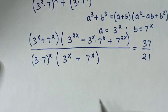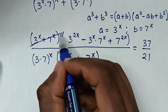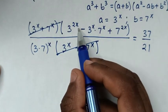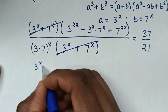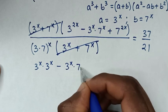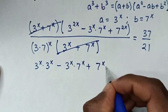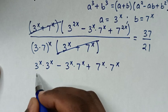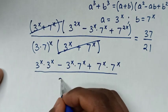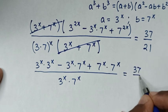Then in the next step, from the numerator we have 3^x plus 7^x, and also here in the denominator, so this and this will cancel. Then 3^(2x) is the same as 3^x times 3^x, minus 3^x times 7^x, then plus 7^(2x) is the same as 7^x times 7^x. Then over, we take power of x inside the bracket, then to be 3^x times 7^x, is equal to 37 over 21.